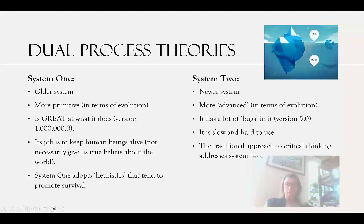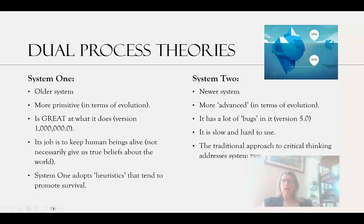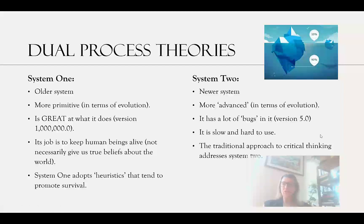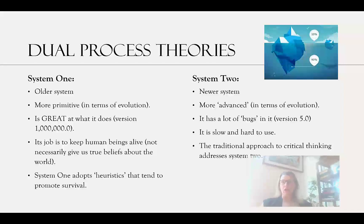The traditional approach to critical thinking addresses System Two — the conscious system. Think of it like this iceberg. System Two is the part visible above the water — you're aware that you're using it, and it's available to your conscious mind. That's what the traditional approach to critical thinking addresses. The older system, System One, is going on in the background, and you may not even realize it's there, working and pushing your attention in certain directions. So you could imagine in a critical thinking course just focusing on the top part — you'd learn good skills and tools — but you'd miss all the hidden unconscious processes that will sabotage what's going on in the conscious layers.